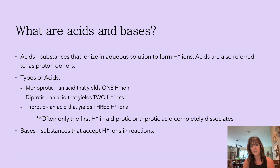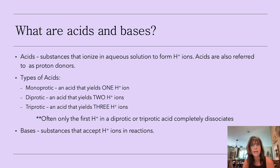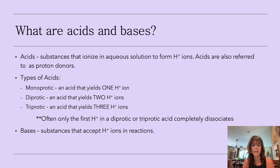Bases are anything that accept hydrogen ions. The Arrhenius model said if you have an OH, you're a base — but that eliminated things like NH3. Ammonia is a base, but it doesn't have OH. So they came out with the Bronsted-Lowry model: if you accept a hydrogen, you're a base. And the Lewis base model: if you donate electrons, you're a base. For right now, if you donate H's you're an acid; if you accept them, you're a base.